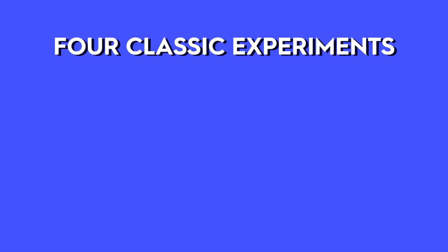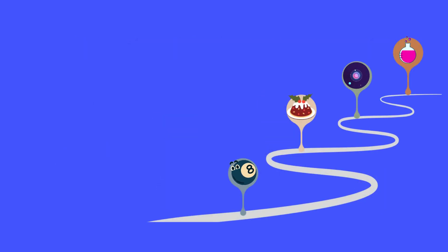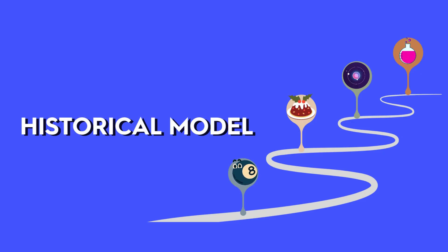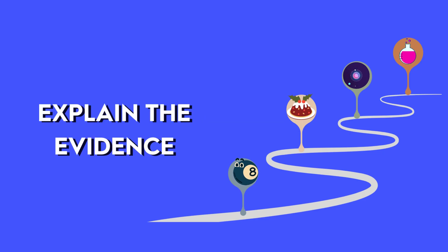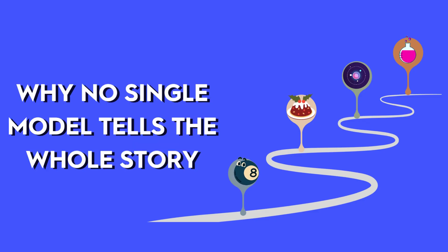In this video, you'll travel through four classic experiments, from Dalton's gas jars to Millikan's oil drops, to see how our picture of the atom evolved. By the end, you'll be able to sketch each historical model, explain the evidence that supported it, and understand why no single model tells the whole story.